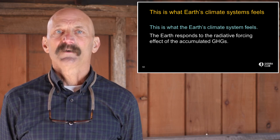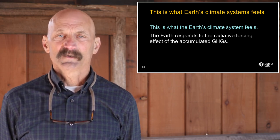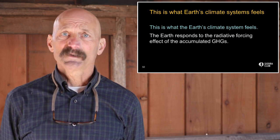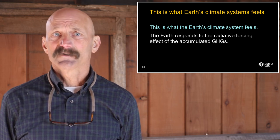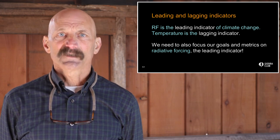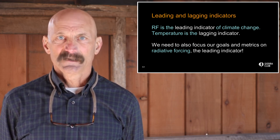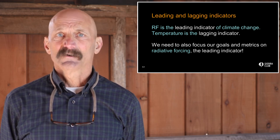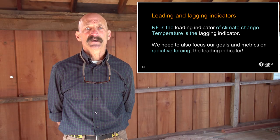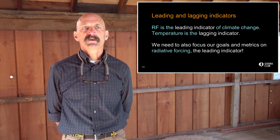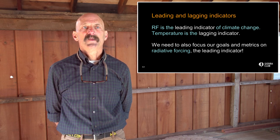This is what the Earth's climate system feels. The Earth responds to the radiative forcing effect of all accumulated greenhouse gases. The United States and Europe — leaders among the affluent industrialized global north — are the big winners in this category. Radiative forcing is the leading indicator of climate change. Global average temperature is the lagging indicator, changing in response to increasing or decreasing radiative forcing. At the COP15 climate talks in Copenhagen in 2009, parties reached a hard-won agreement to set a climate target based on 2 degrees centigrade of warming — the lagging indicator.